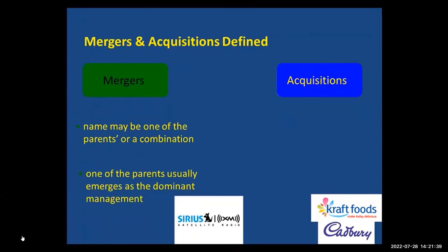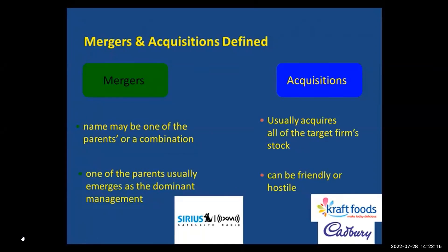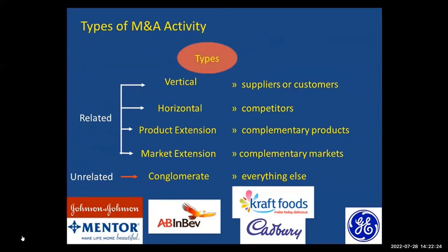One of the parents, regardless of how their name changes, usually emerges as the dominant management team. Daimler, a German company, became the dominant management team of DaimlerChrysler. In acquisitions, the acquiror — such as Kraft Foods in the Cadbury case — buys out all the firm's stock. These activities can be friendly or hostile for the acquiree. There are several types of merger and acquisition activity. Vertical activity involves buying a supplier or customer to streamline cost structure — for example, Johnson & Johnson acquiring Mentor, a latex glove company, to become a supplier to other J&J divisions.